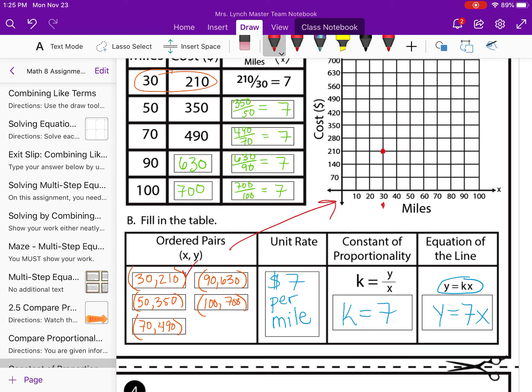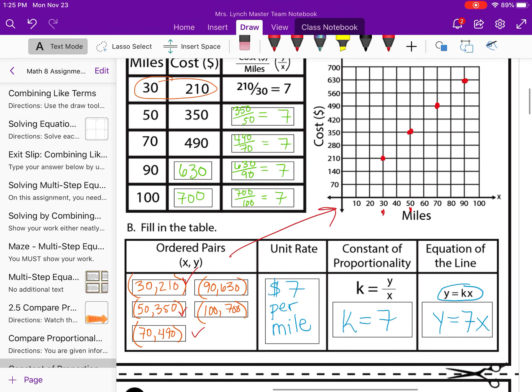Okay, I'm going to put a little check mark. Okay, that one's done. The next one is 50, 350. So again, find 50. And then go up to 350. Okay, check that one off. 70 and 490. It's going to be right there. 90 and 630. I think I need to move it a tiny bit. There we go. And the last one is 100 and 700.